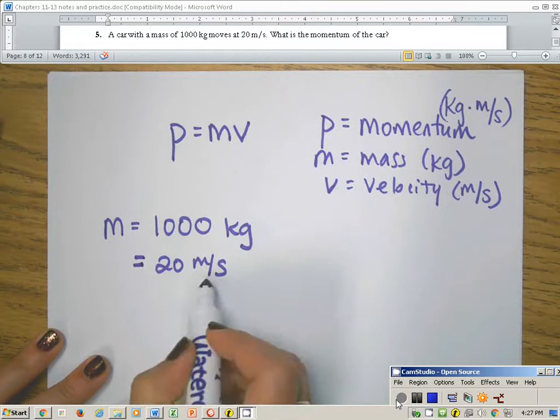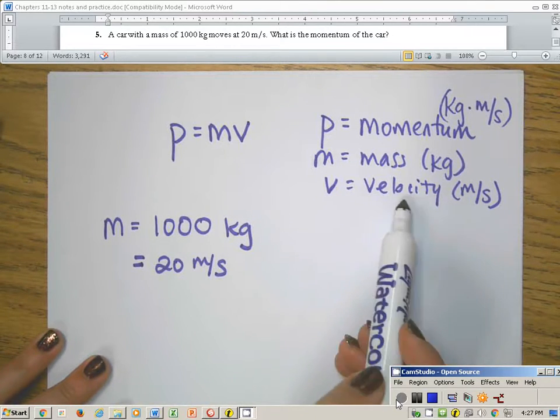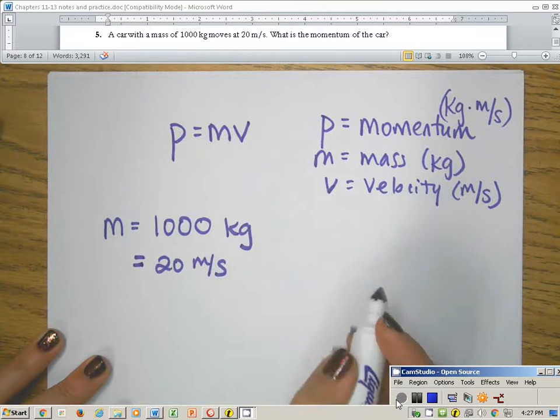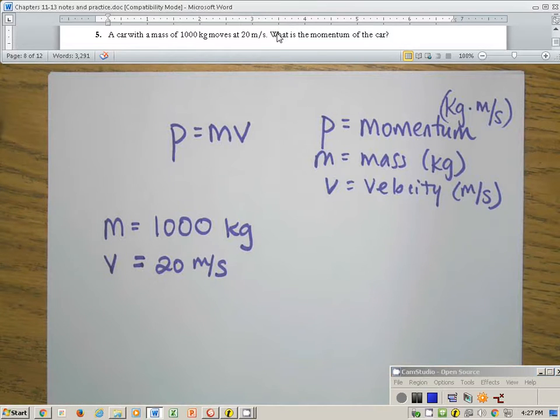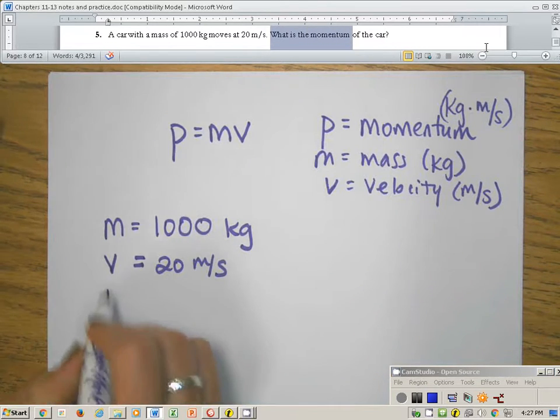Well I know that meters per second is the unit of velocity. I need to memorize this, so that's a v. And the question up here says, what is the momentum of the car? So what it's asking me to find is p.